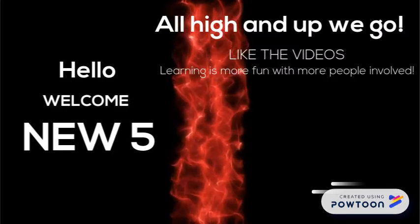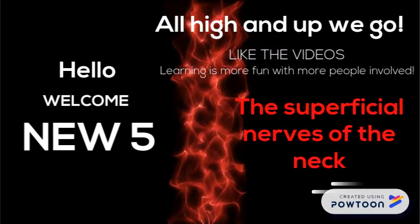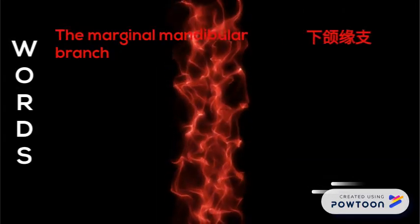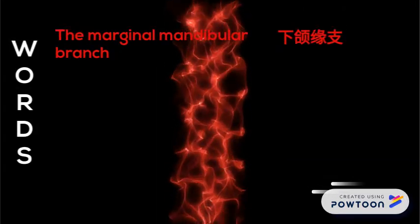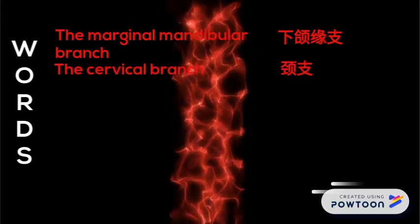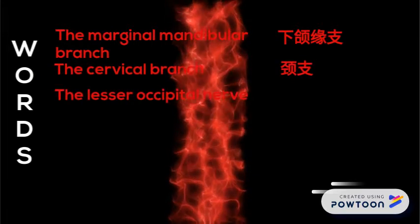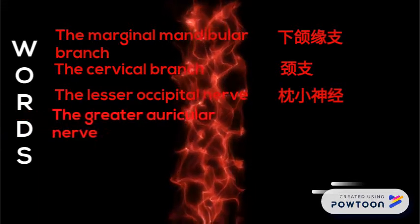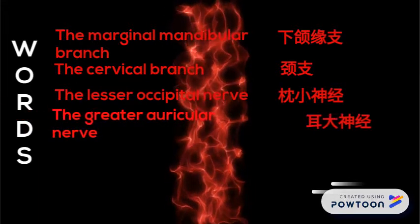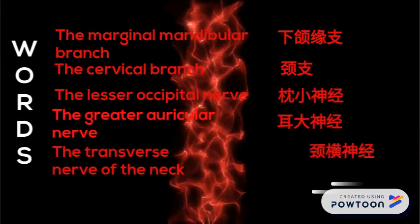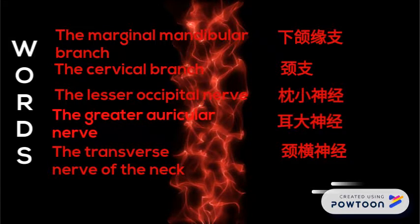So in this episode, we'll take a look at the superficial nerves of the neck: the marginal mandibular branch (xia he yuan zhi), cervical branch (jing zhi), the lesser occipital nerve (zhen xiao shen jin), greater auricular nerve (er da shen jin), and the transverse nerve of the neck (jing heng shen jin).